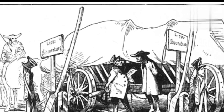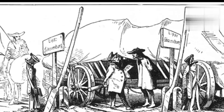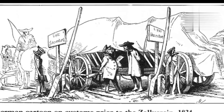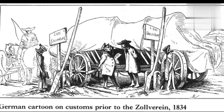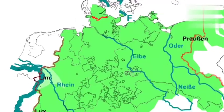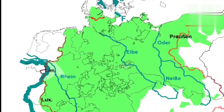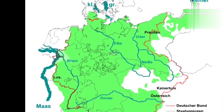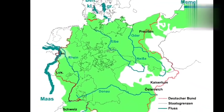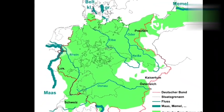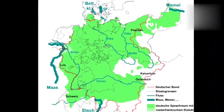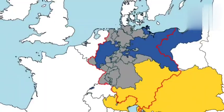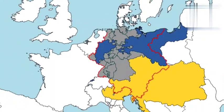To complete the unification of Germany, Bismarck had to overcome the opposition of France. In 1870, he encouraged a Hohenzollern prince to accept the throne of Spain. As Bismarck expected, France objected.